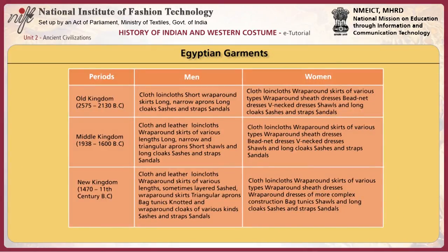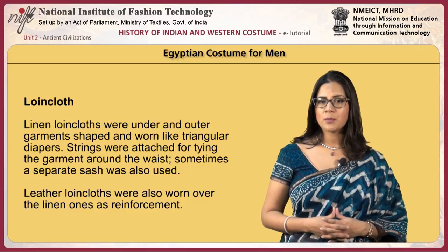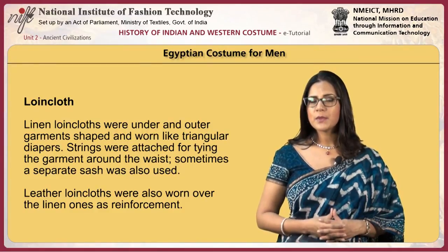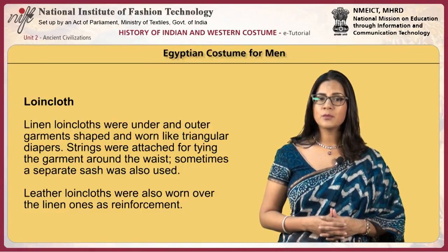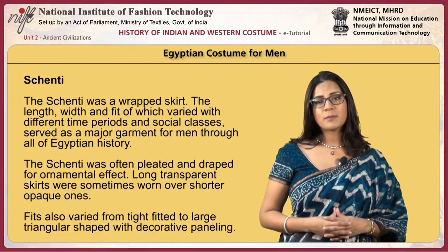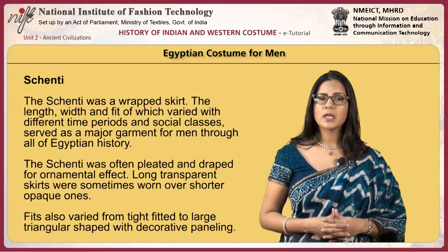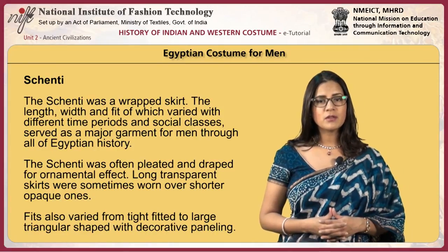The table gives details of the garments worn by Egyptian men and women during various historical periods. Traditional Egyptian costumes for men were the loin cloth and a wrapped skirt called shenti. Linen loin cloths were under and outer garments shaped and worn like triangular diapers, with strings attached for tying around the waist; sometimes a separate sash was also used. Leather loin cloths were also worn over linen ones as reinforcements. The shenti was a wrapped skirt whose length, width and fit varied with different time periods and social classes, and served as a major garment for men through all of Egyptian history. The shenti was often pleated and draped for ornamental effect.